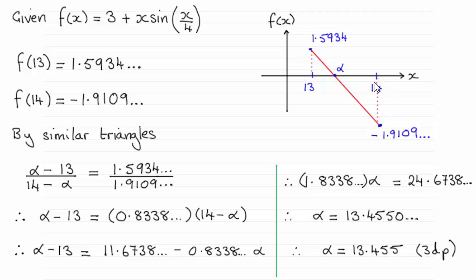Now using similar triangles, we know that this triangle here is going to be similar to this one. Then by comparing lengths, you can see that I've got alpha minus 13. That's that length there. When compared to this length, 14 minus alpha.